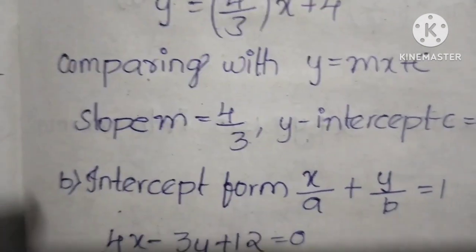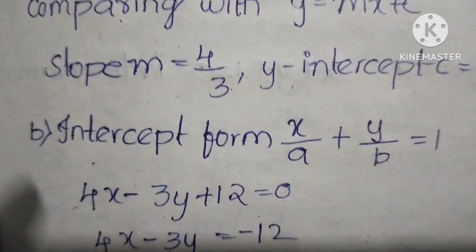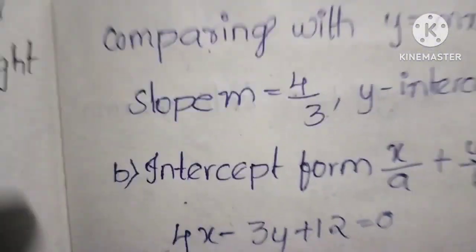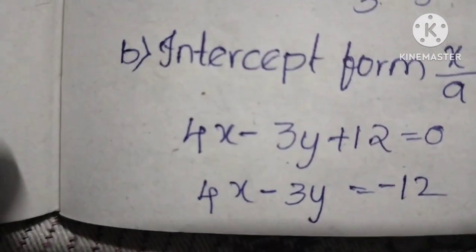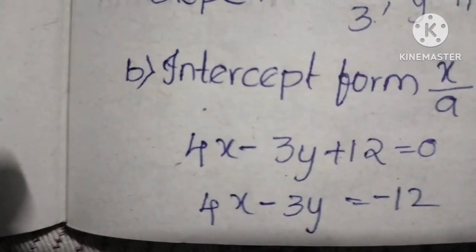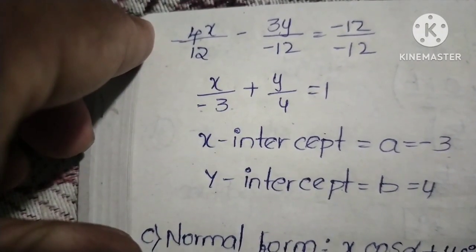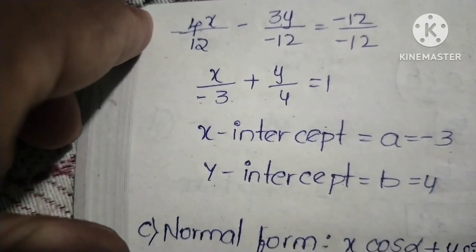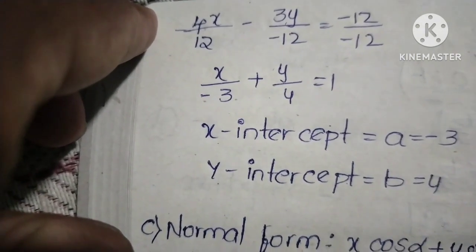For intercept form x by a plus y by b equals 1, start with 4x minus 3y plus 12 equals 0. Transfer to get 4x minus 3y equals minus 12. Divide both sides by minus 12.